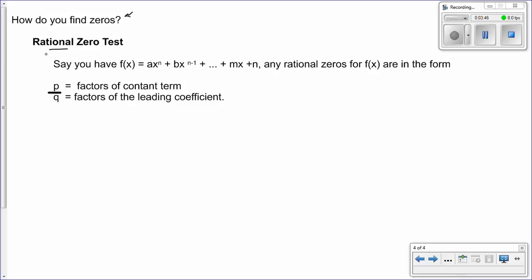Because you know, rational, basically a rational number, they can all be written as fractions. So you're going to have p over q. p is the factors of your constant term. So this is our constant term. So it's going to be the factors of that divided by the factors of your leading coefficient.